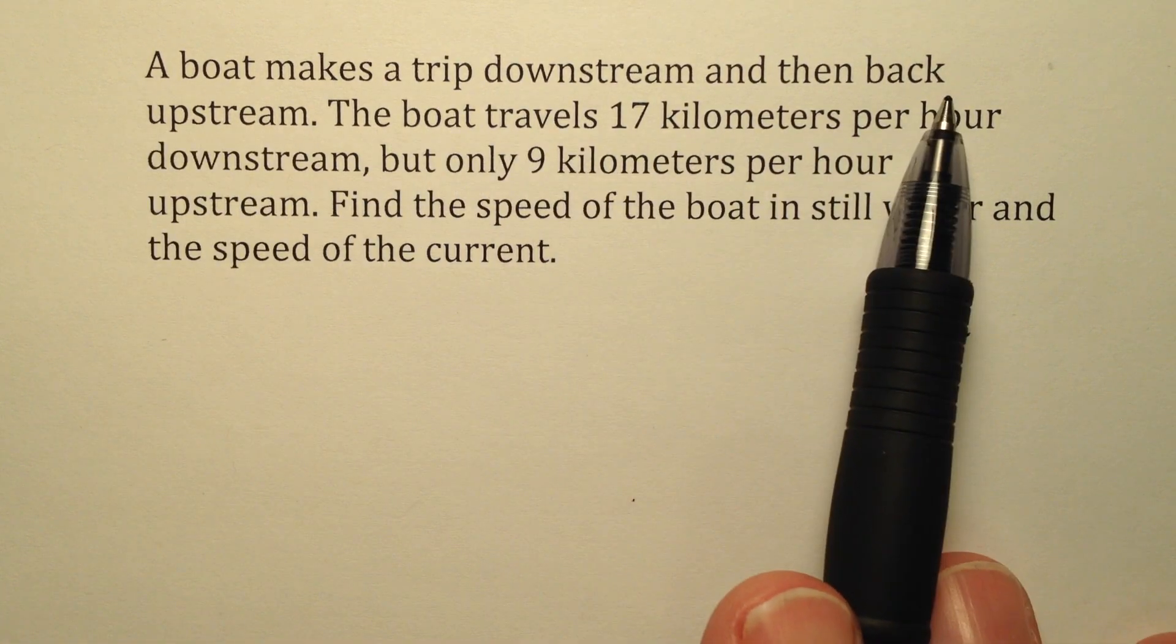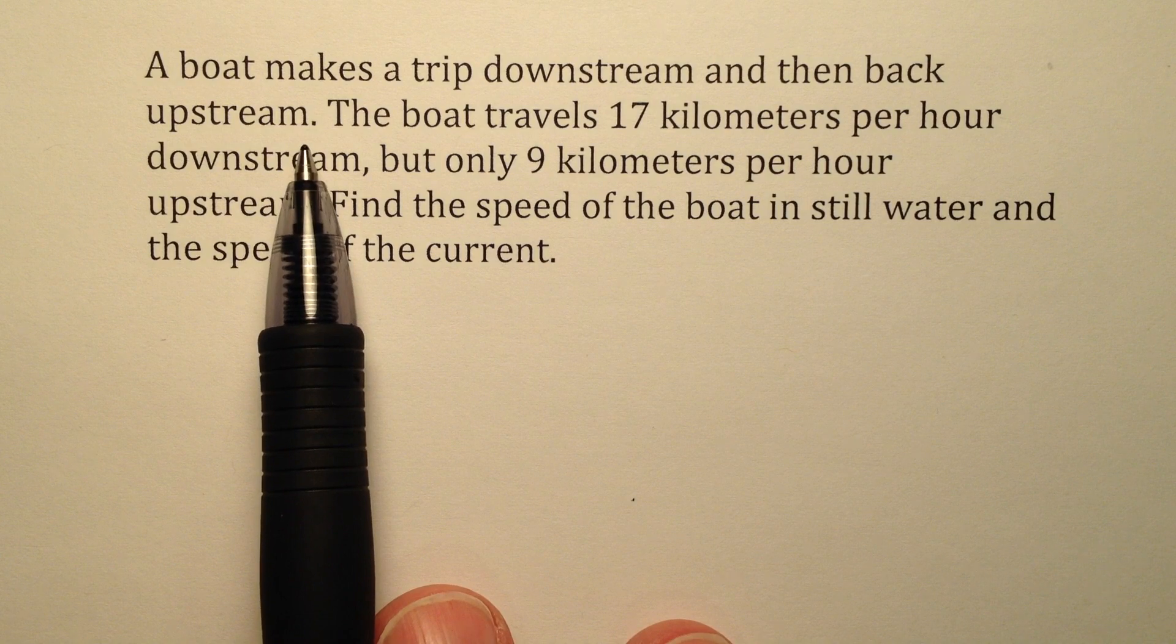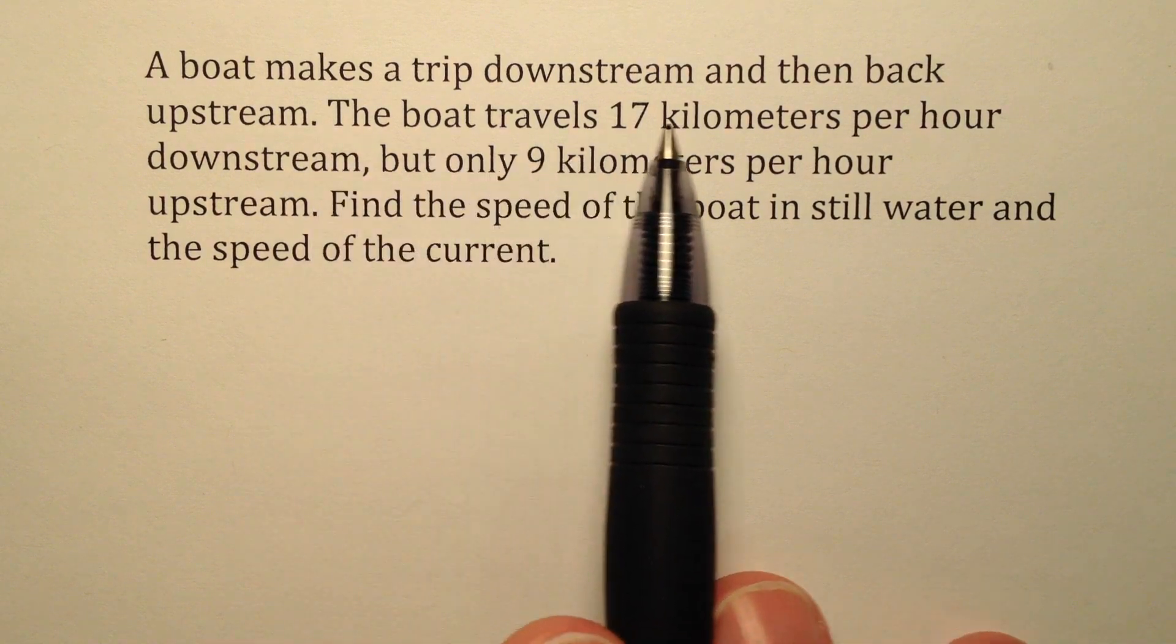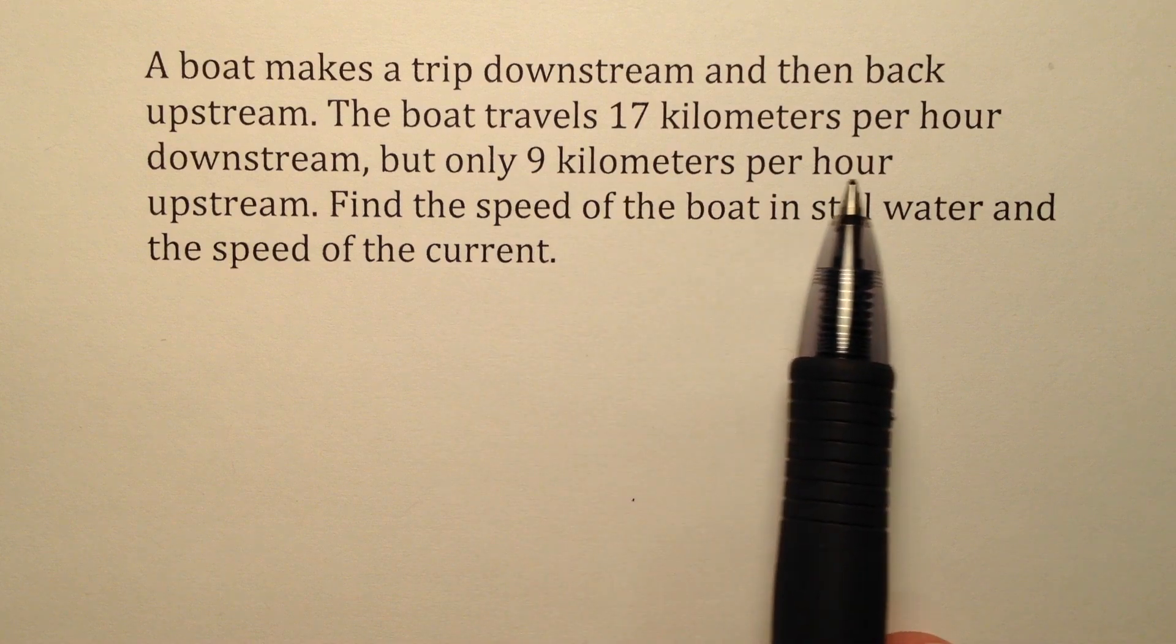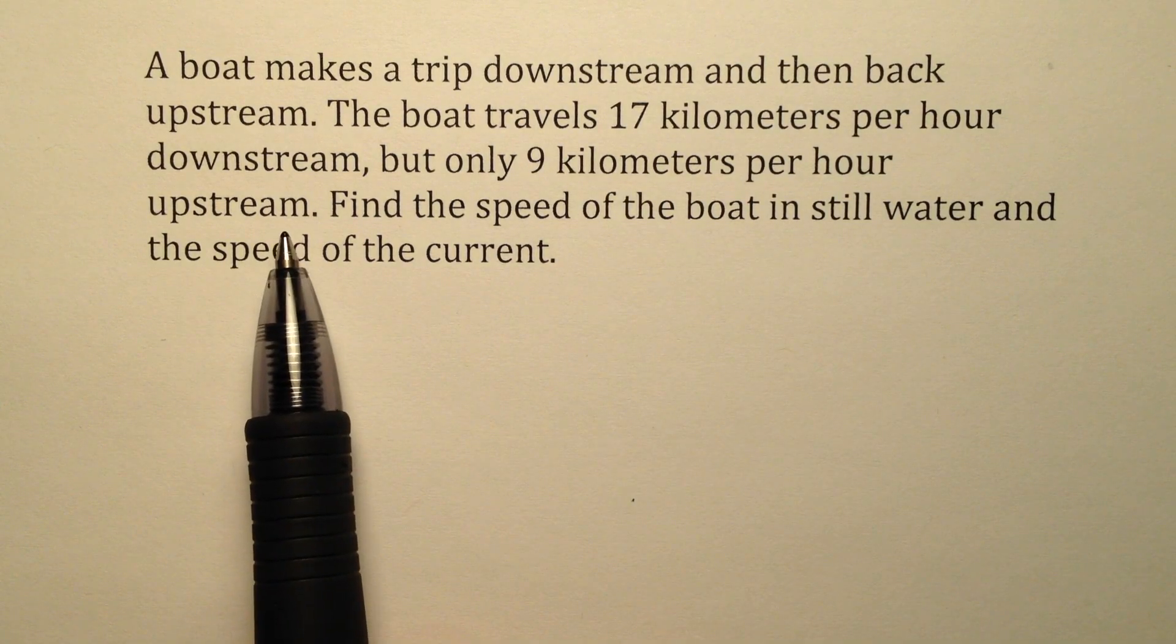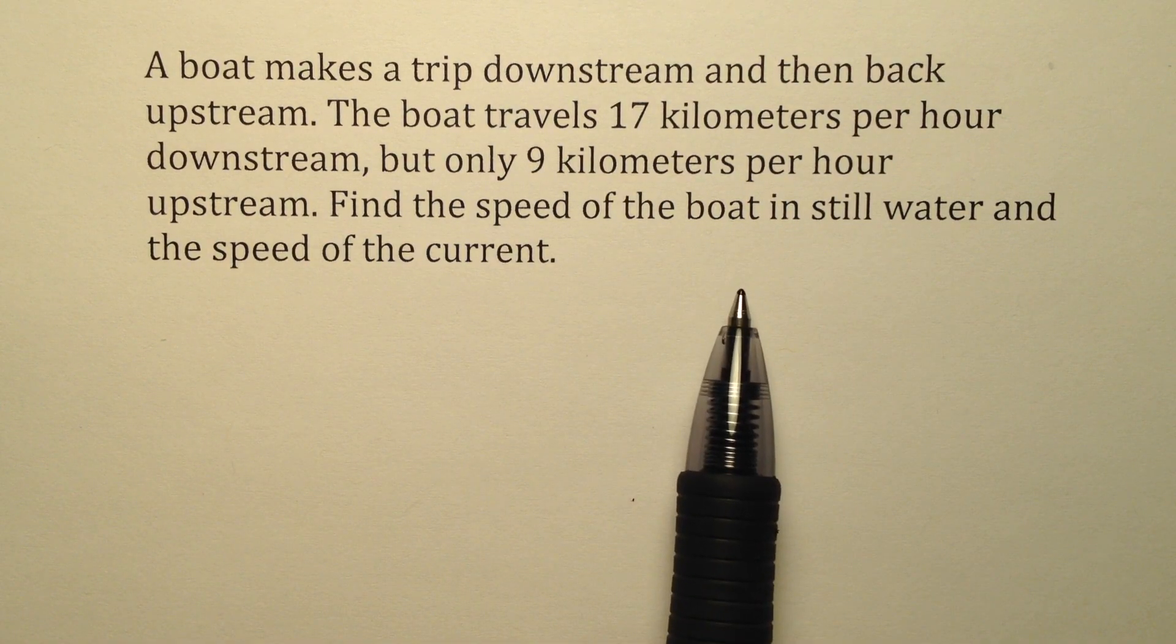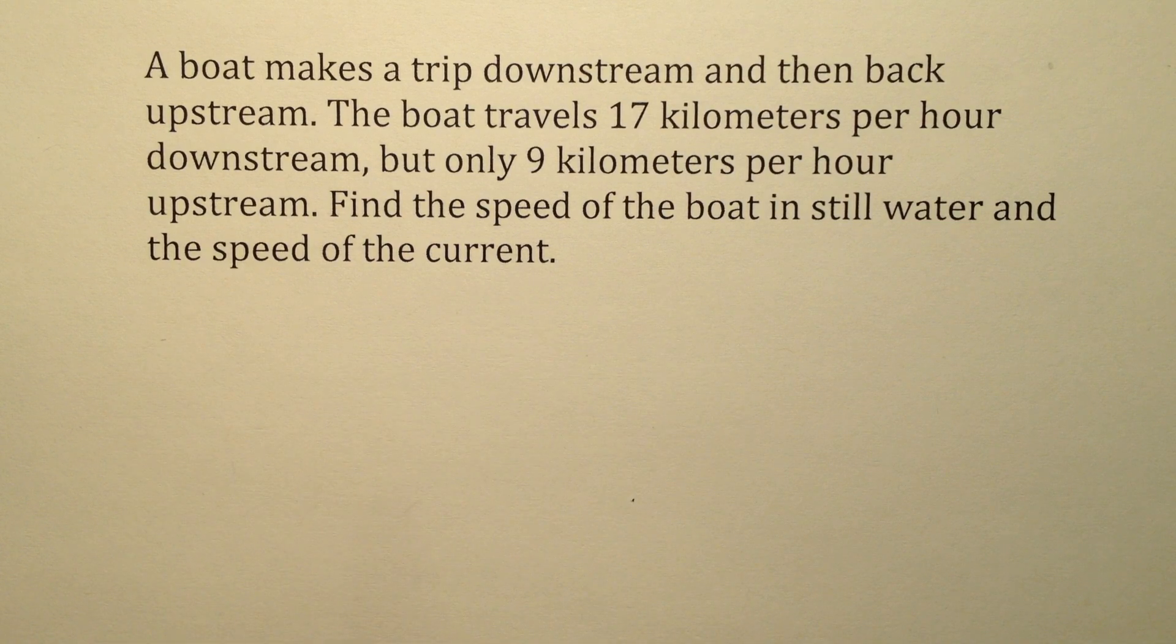So a boat makes a trip downstream and then back upstream. The boat travels 17 kilometers per hour downstream, but only 9 kilometers per hour upstream. Find the speed of the boat in still water and the speed of the current.